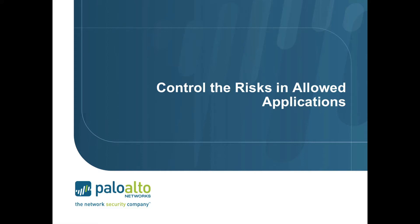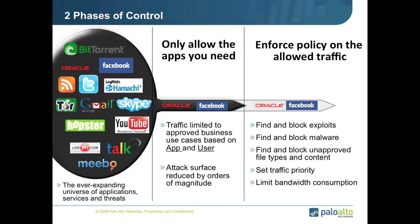One of the most important things when controlling applications is that we not only control applications, but understand that those applications can still bring risk into the environment that we want to mitigate and keep out of our networks. Palo Alto Networks addresses this problem with two very unique phases of control.